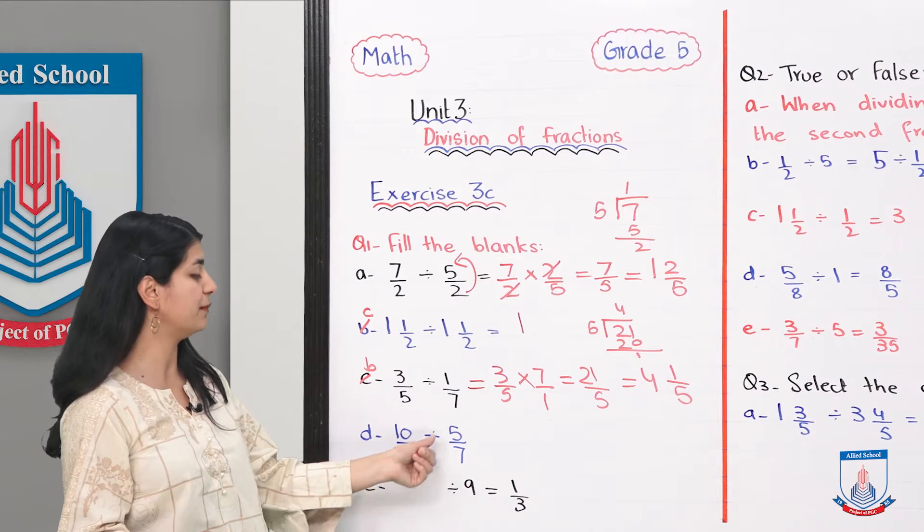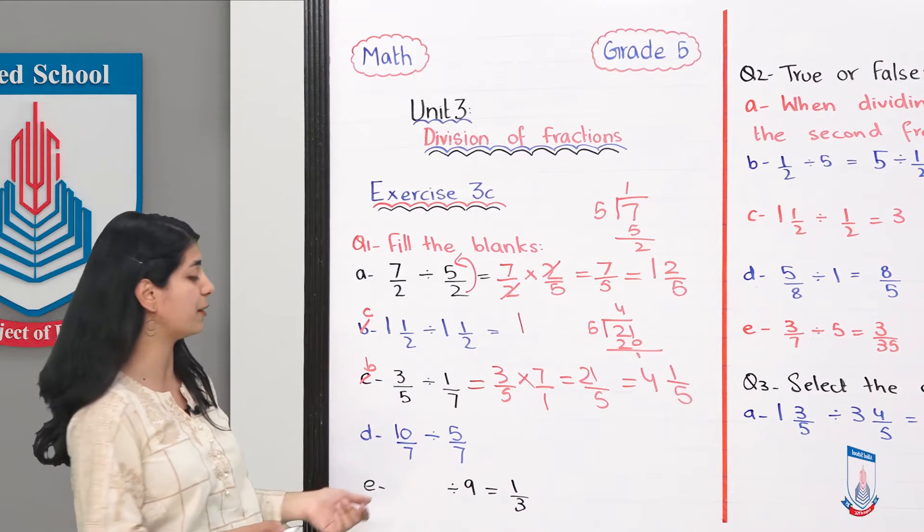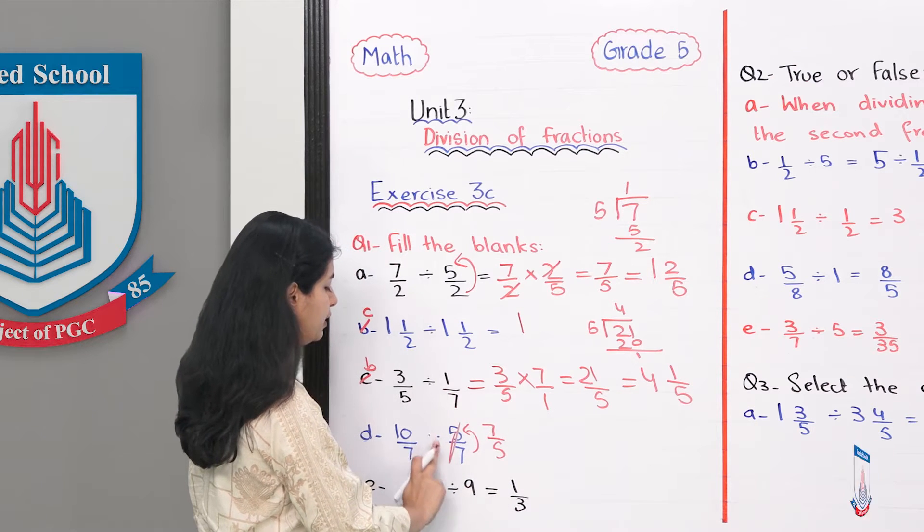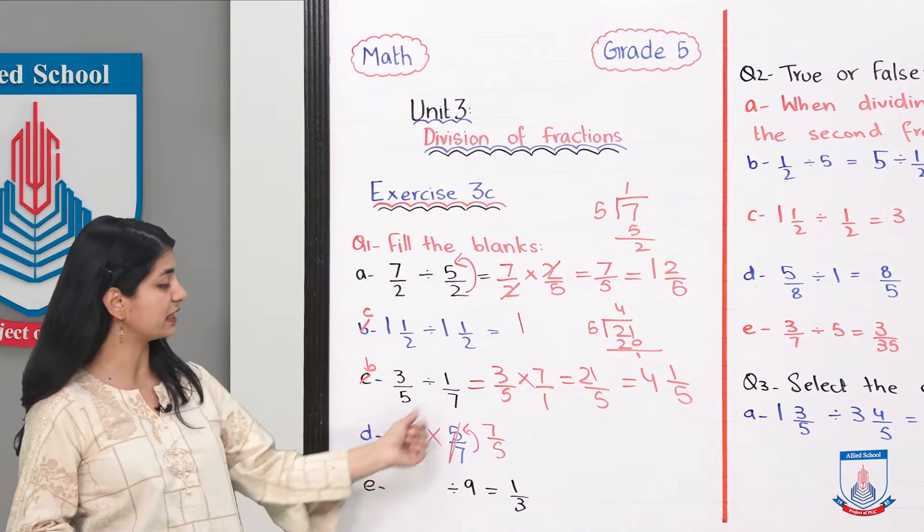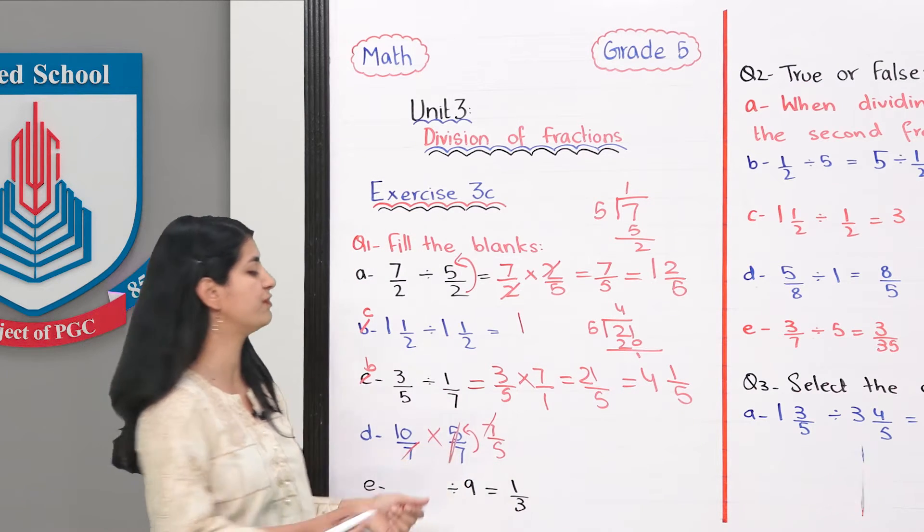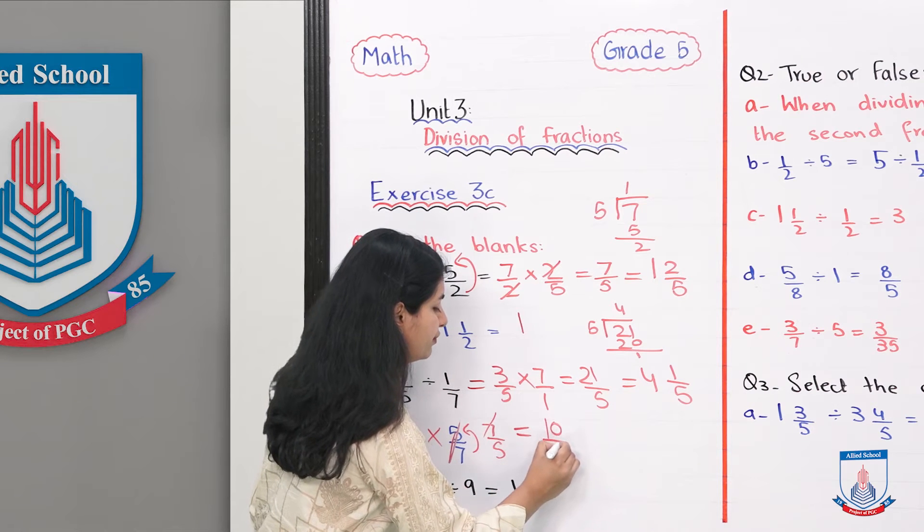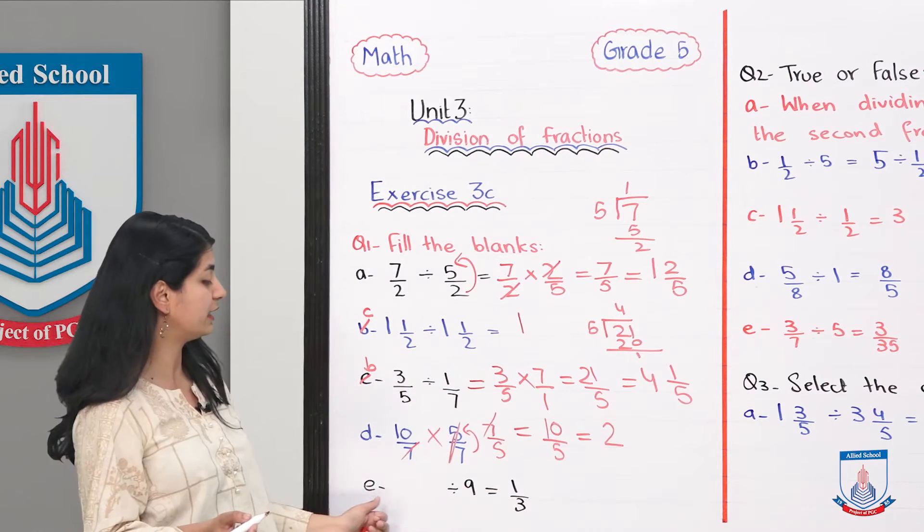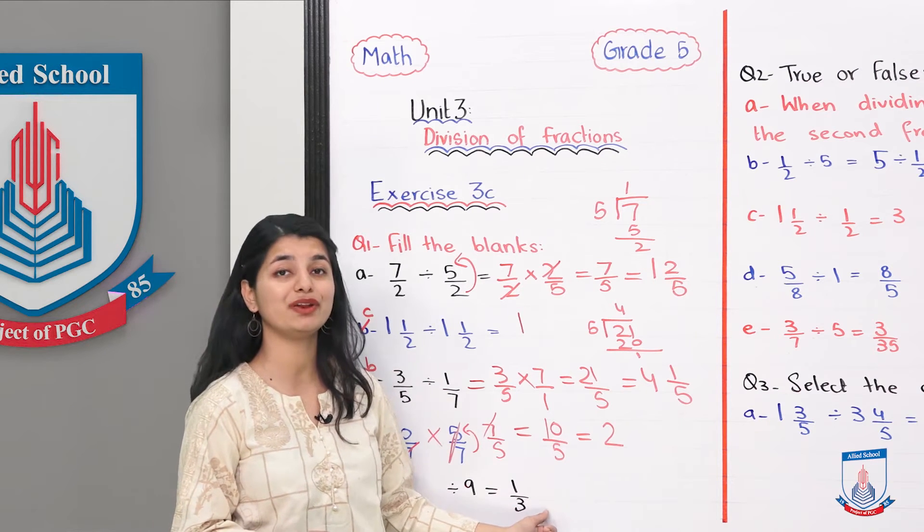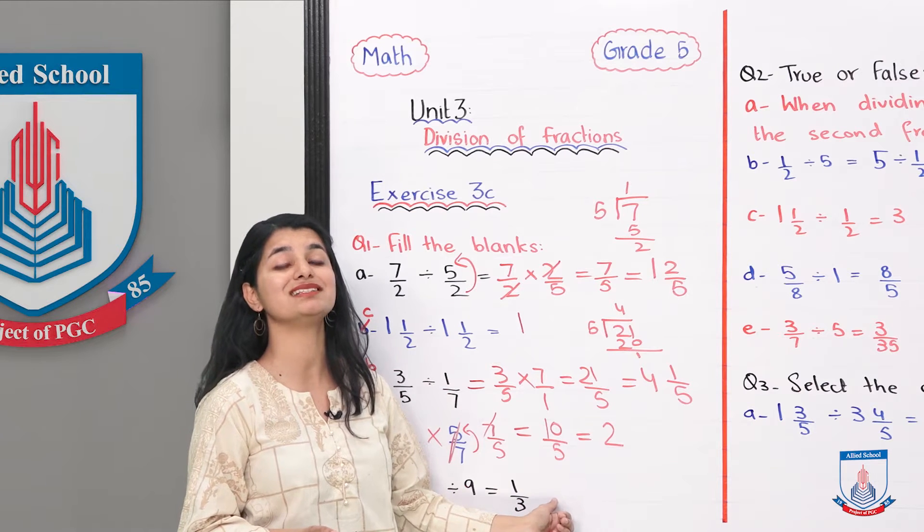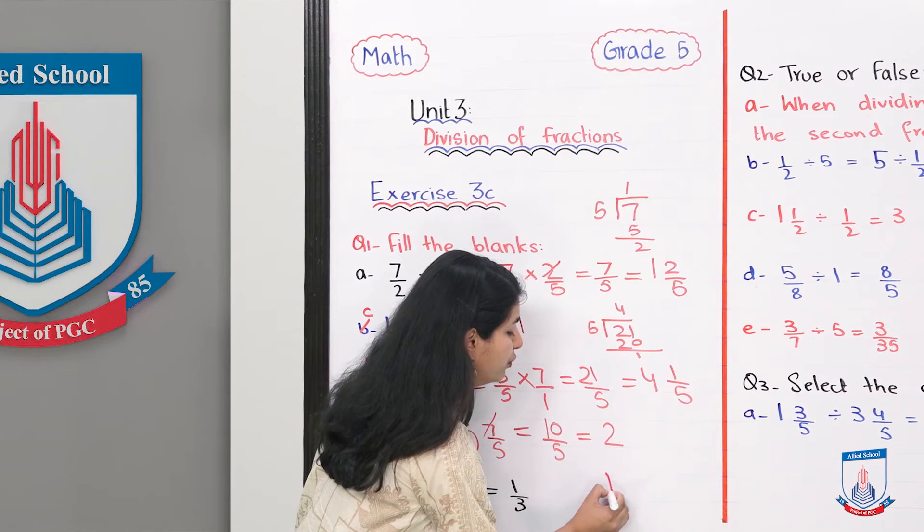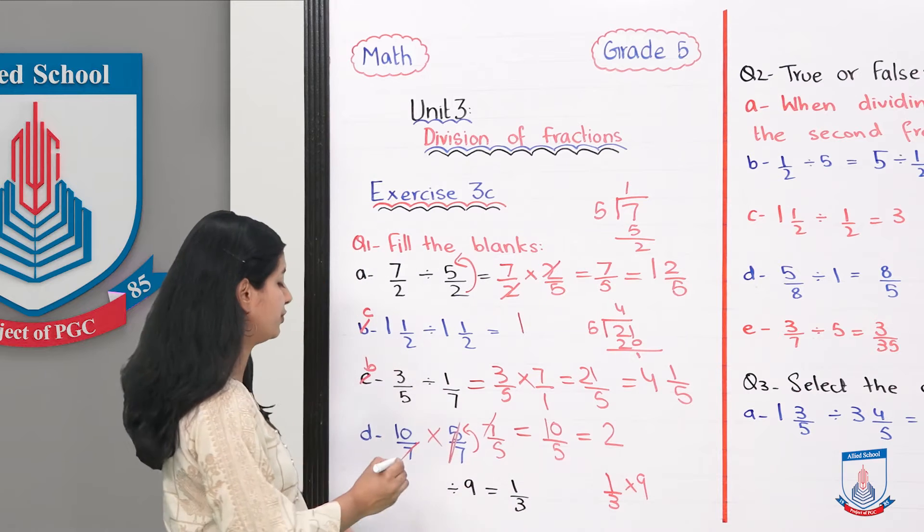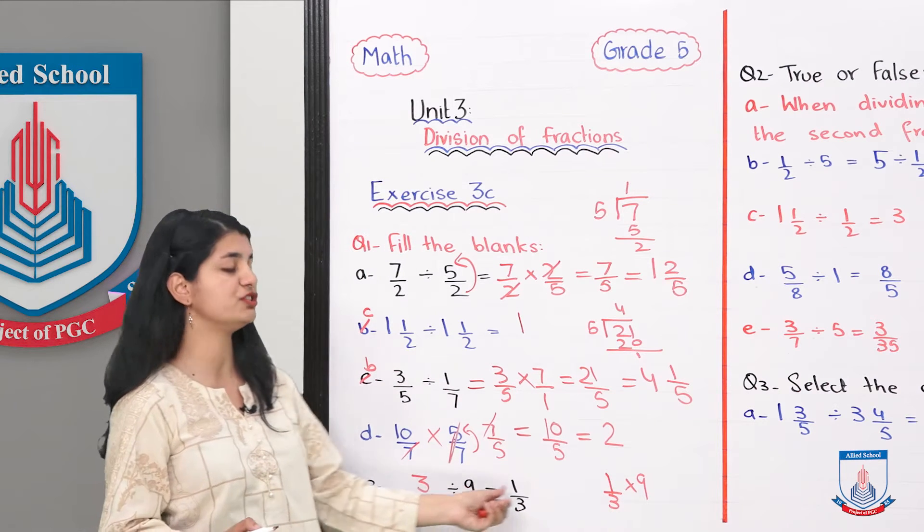If we look at part D, 10 divided by 7 divided by 5 over 7. We invert and multiply. 10 over 7 multiplied by 7 over 5. We can cancel 7s. We get 10 over 5 which equals 2. So your answer is 2.